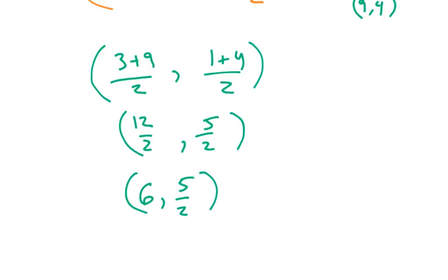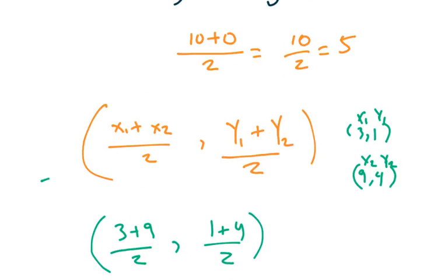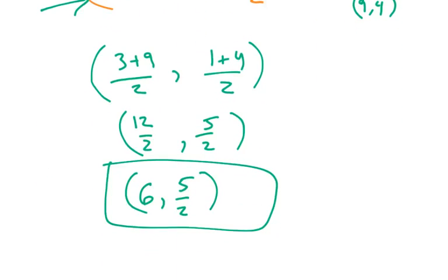And that's it. That's all you have to do. So just remember that the midpoint formula is the average of the x's and the average of the y's. Plug and chug, and you get your answer. I hope that makes sense. See you in the next video.